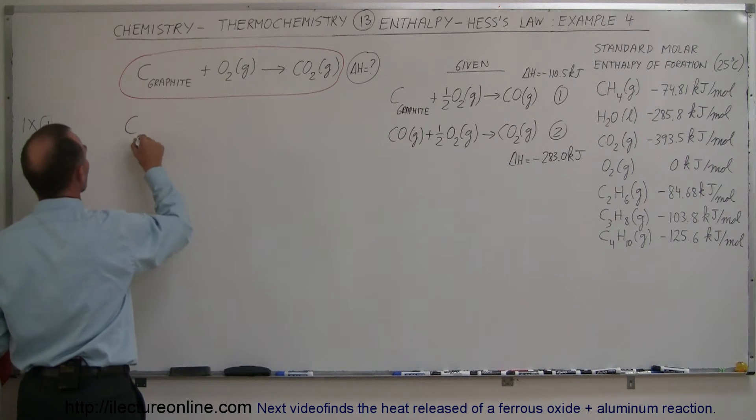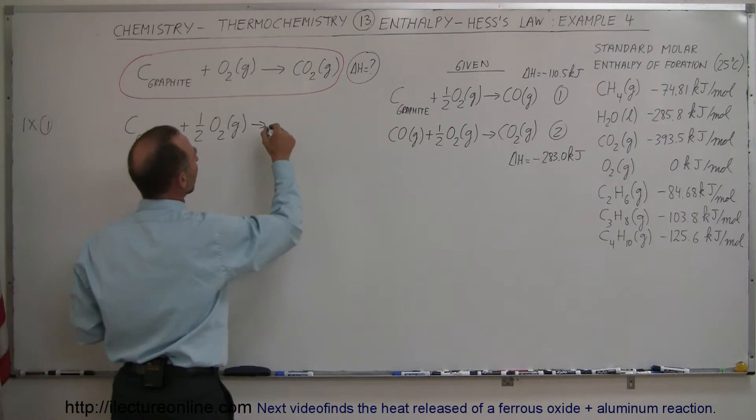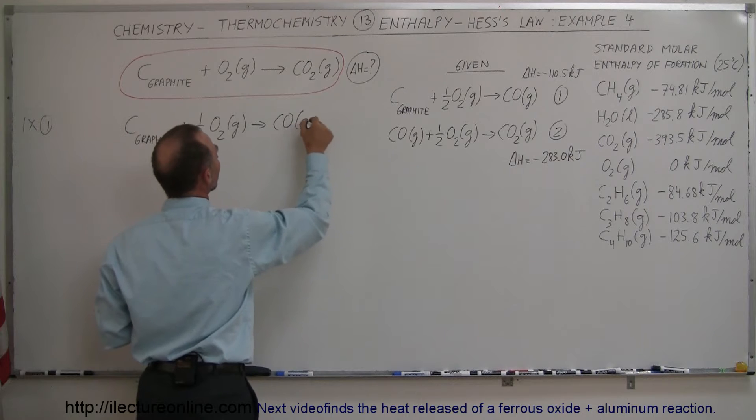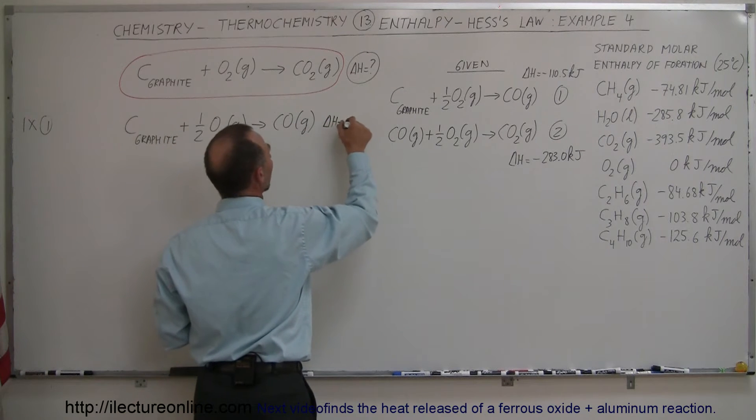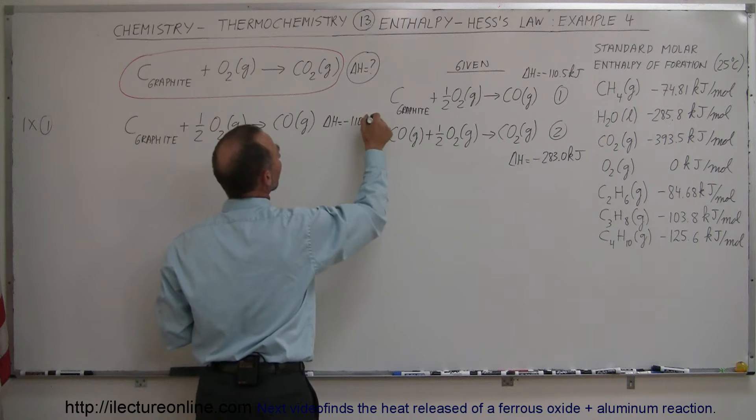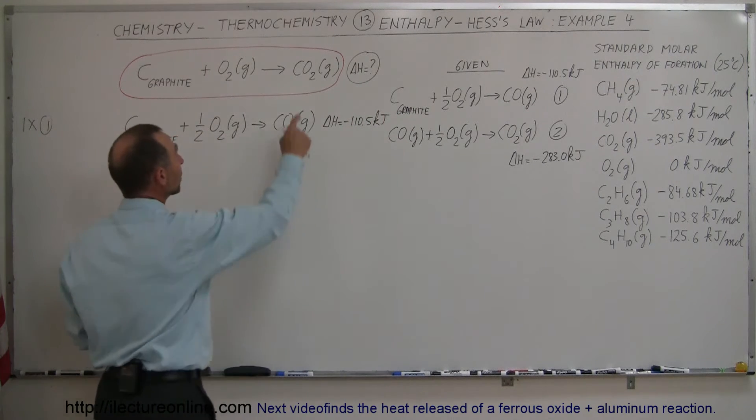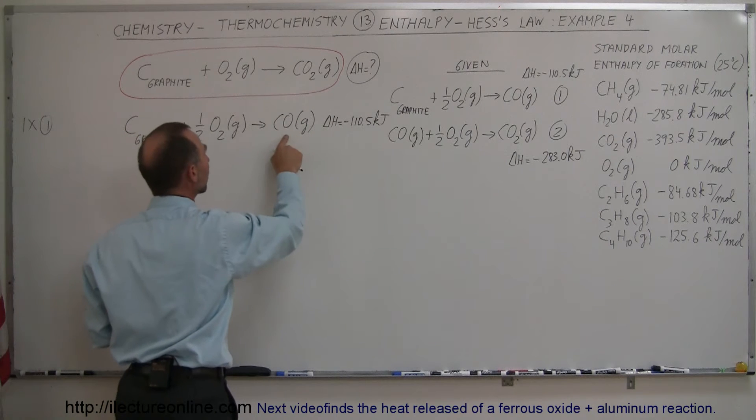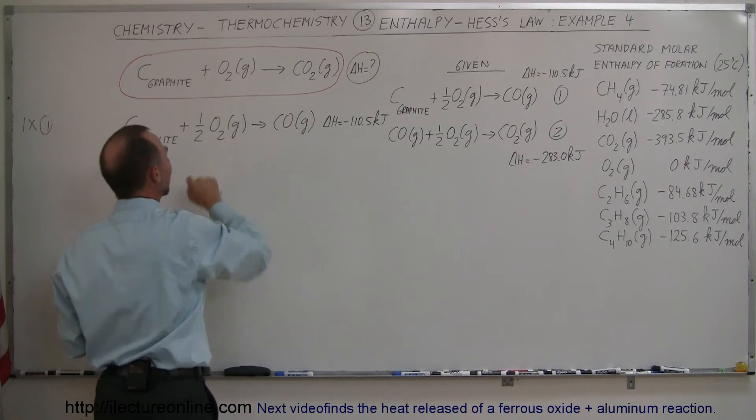We have graphite plus half a mole of oxygen gas reacts to form carbon monoxide gas, and that has an enthalpy change of minus 110.5 kilojoules. Not quite what we wanted because we have carbon dioxide gas here. This is only carbon monoxide gas. Here we have a full mole of oxygen gas and only half a mole here.